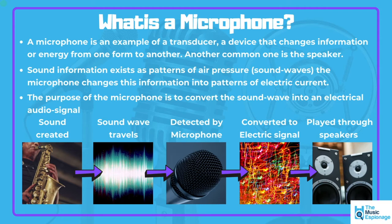The purpose of the microphone is to convert the sound wave into an electrical audio signal. Take the example of a guy playing the saxophone: the sound is created, producing vibrations in the air, and those vibrations travel as a sound wave through the medium of air. Remember that sound needs a medium in which to propagate — it can travel through water or air, but in a vacuum like space it cannot travel, as there's no medium for the sound waves to pass through. The microphone then detects those sound waves and, depending on the type — whether it's a dynamic, condenser, or ribbon microphone — converts them into an electrical signal, which can then be played through speakers.